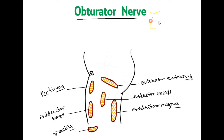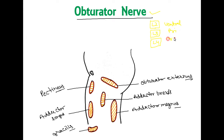After knowing the names of the muscles, we should know the origin of the nerve. It is arising from the L2, L3, and L4 segments. It is a part of the lumbosacral plexus, and these are the ventral primary rami of L2, L3, and L4. So these three will join and pass through the obturator canal.